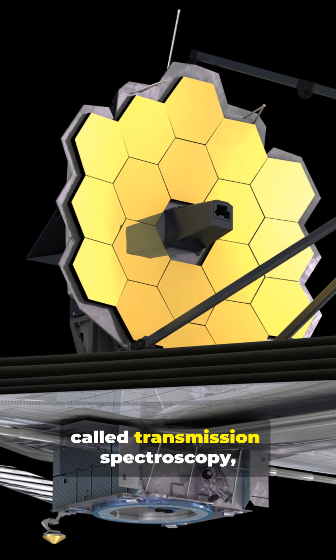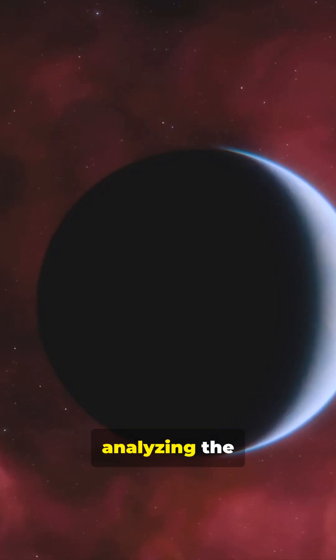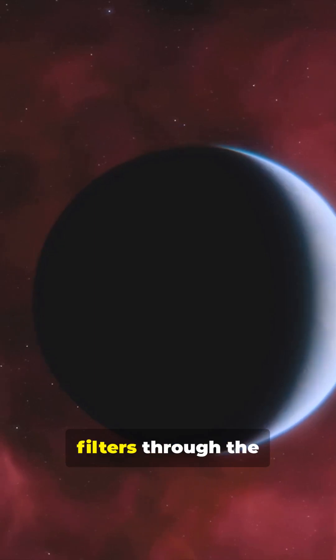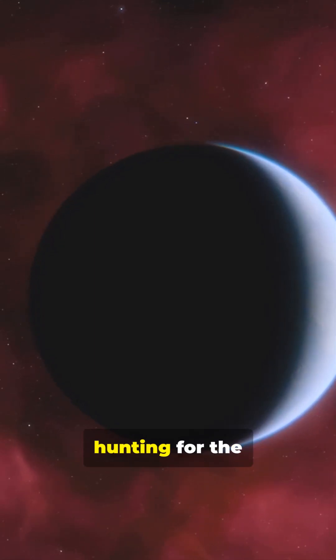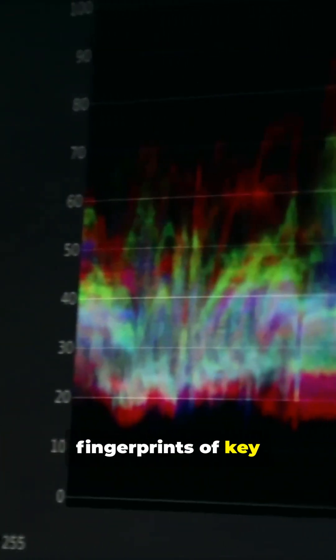It uses a technique called transmission spectroscopy, analyzing the starlight that filters through the planet's atmosphere, hunting for the chemical fingerprints of key molecules like carbon dioxide and water vapor.